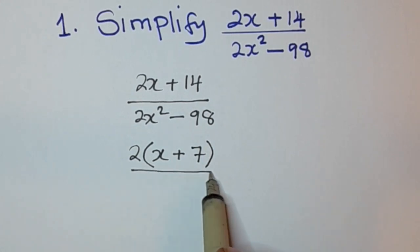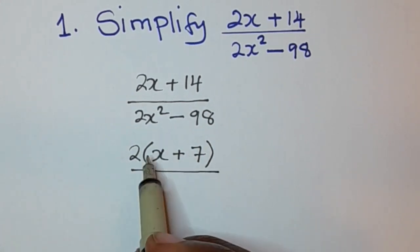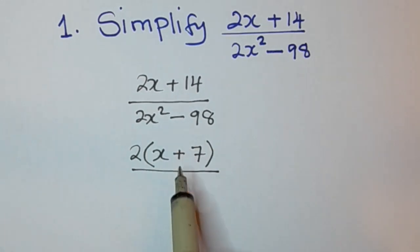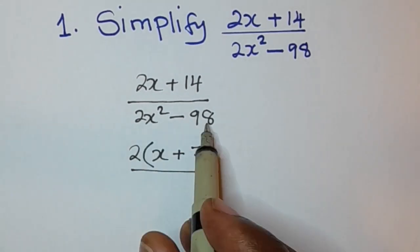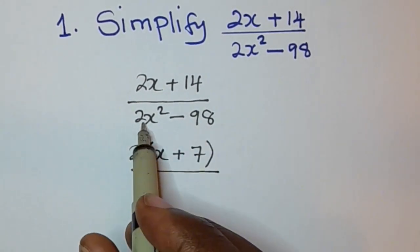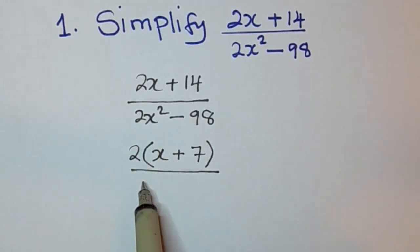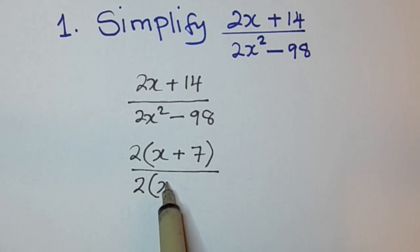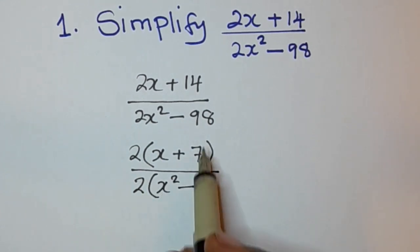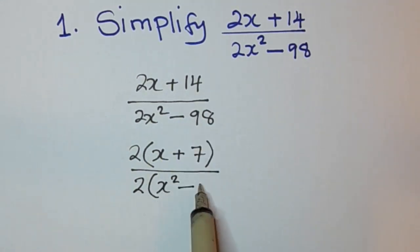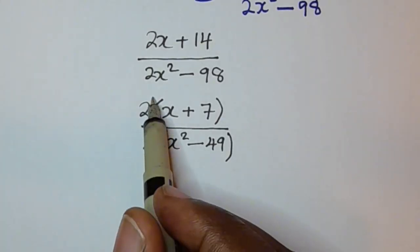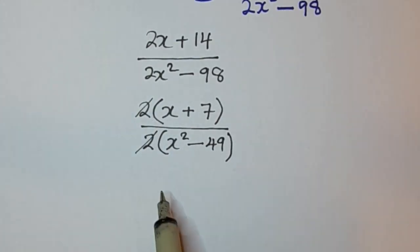Then all over — again, when you look at the denominator, there is something that is common in both terms. A 2 can also go into both terms, so we're going to factorize it. Then 2x squared divided by 2 is x squared, minus 98 divided by 2 is 49. Now this 2 and this 2 can cancel.